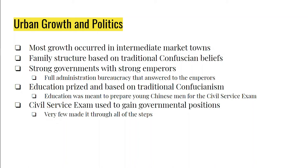The family structure was based on traditional Confucianist beliefs: women were expected to obey men, men obeyed elders, and everybody obeyed the government and the emperor. Women were physically restricted, and there was a practice called foot binding meant to keep women in the home. Basically, the foot was broken as a young child, allowed to heal, then broken again, resulting in tiny, malformed feet.